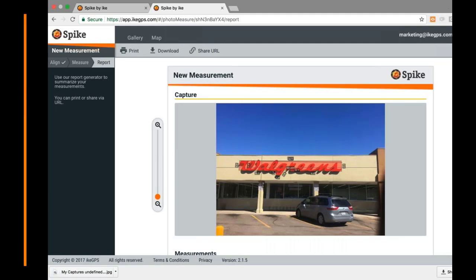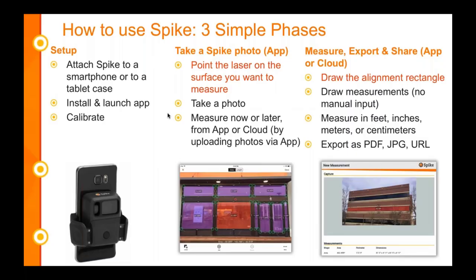As far as usability of Spike goes, there are three simple phases. Spike is not entirely brain-dead, but the learning curve is very small. The setup phase is simply: attach Spike to your phone or tablet, install and launch the app, then do a one-time calibration — aligning the laser Spike device with the camera of your phone or tablet. Then it's taking the photo: point the laser at the surface you want to measure and take the photo. Next, draw that alignment rectangle — that is the one step you don't want to skip. Then draw all the measurements with no manual input, change your unit of measurements in the cloud or app, and export your different file types.